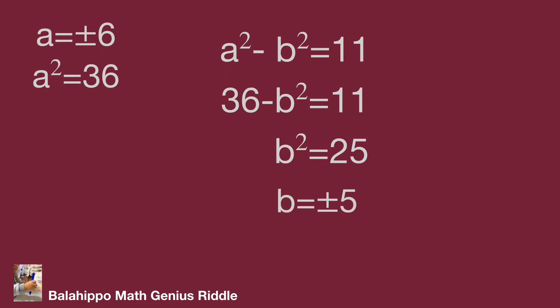That's the answer: A = ±6 and B = ±5. Do you get the same result? Hope you enjoyed the video. Thank you.